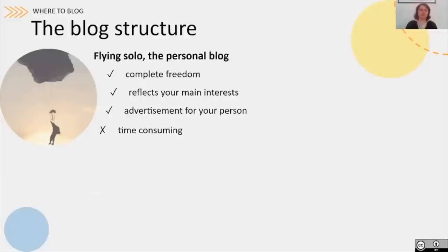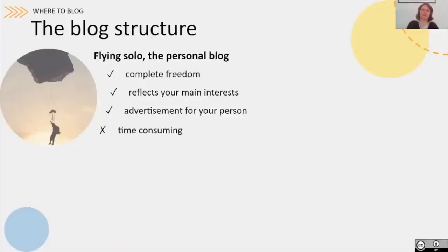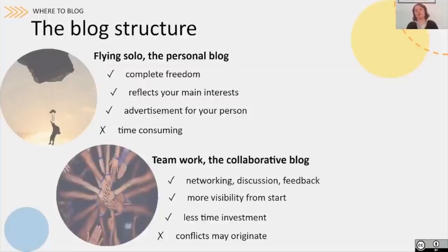Now you approximately know what you want to write about and when. You also need to address the question of where, because you can either publish on a personal blog or a collaborative blog. The advantages of a personal blog are that you have complete freedom, it will reflect your main interests, and it will be advertisement for your person — it will be all about you. But keep in mind that it is also very time consuming, because you will have to take care of the website, the structure, and do everything by yourself.